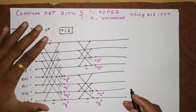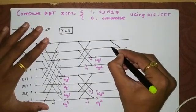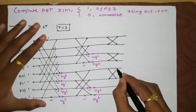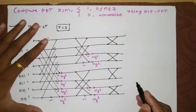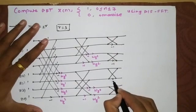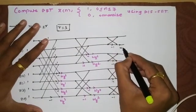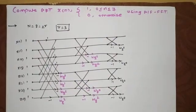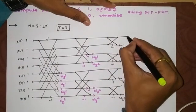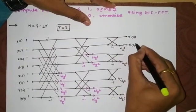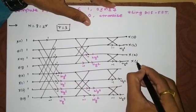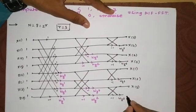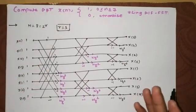The final stage of decimation is between two points only. The mappings are between samples 0 with 1, 2 with 3, 4 with 5, and 6 with 7 — all with minus signs for the lower branches. They are multiplied with twiddle factor ω₈⁰ only. The outputs are labeled X(0), X(4), X(2), X(6) in that order.